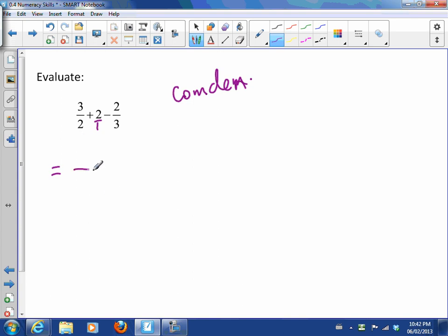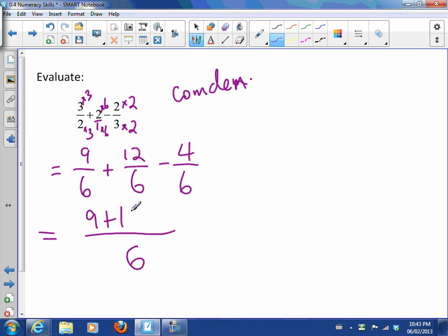Okay, so if I want to make this a 6, that means I have to multiply it by 3, so I have to multiply both the top and the bottom by 3. So that gives me 9 over 6. Here I need to multiply by 6, so that means I get 12 over 6. And the last one here, I need to multiply by 2 to get 6 on the bottom. So we get minus 4 over 6. So now it's all over 6, and we get 9 plus 12 minus 4.